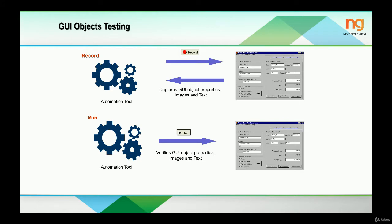Any automation tool has the capability of a feature known as record and run. For example, we have a web application or a desktop application, there will be so many elements inside the application. If we use the record feature of the tool, it will start recording the flow of our cursor movements. It will also capture all the properties of the elements — by properties I mean the XPath, name, ID, etc. of the elements.